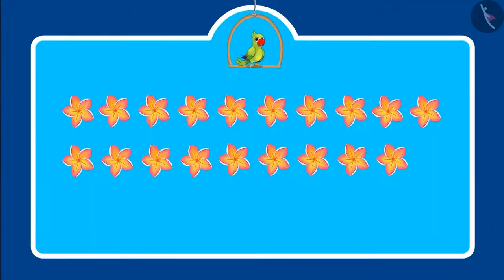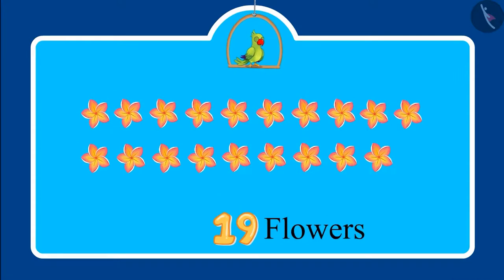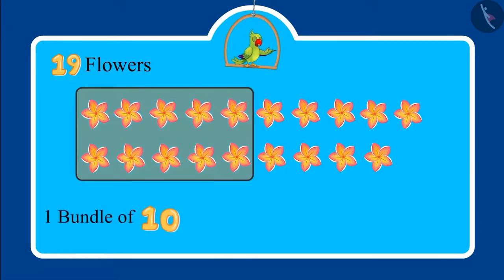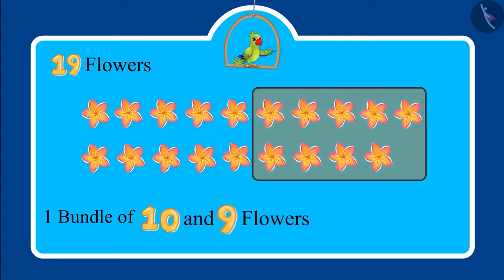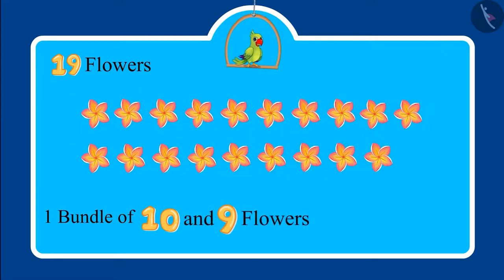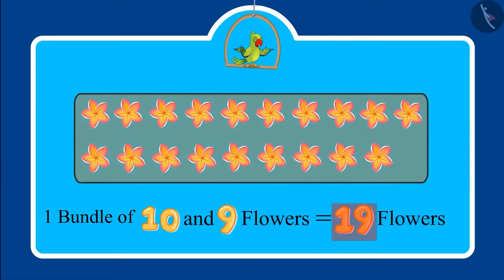These are some flowers. The number of these flowers is written below them — can you identify and tell me this number? This is one bundle of ten flowers and nine more flowers, which means in total nineteen flowers. Very good, children!